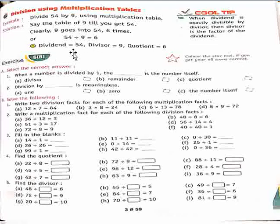The dividend is 54. The divisor is 9. And our answer, the quotient, is 6.